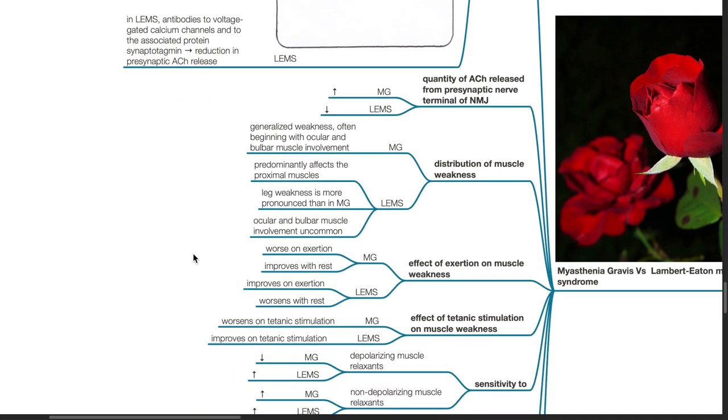Distribution of muscle weakness. In MG, there is generalized weakness often beginning with ocular and bulbar muscle involvement. In LEMS, weakness predominantly affects the proximal muscles. Leg weakness is more pronounced than in MG. Ocular and bulbar muscle involvement is uncommon.